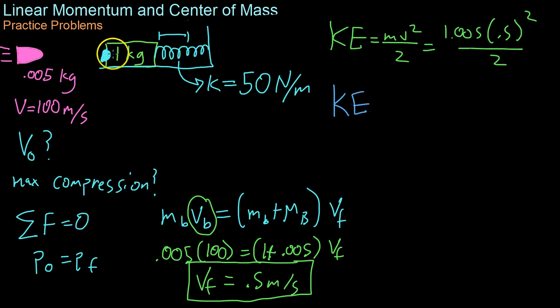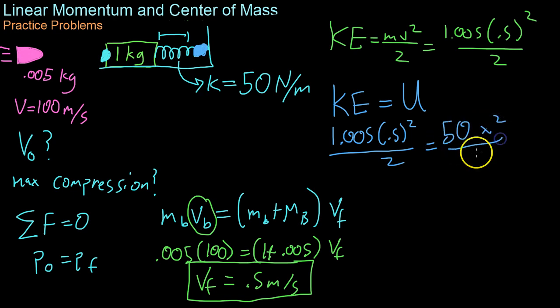In other words, the kinetic energy at this point is equal to the potential energy when it gets all the way back here and the spring is very compressed down in here. So we can take our kinetic energy equation we've solved for, set it equal to kx squared. In this case, that's 50 x squared over 2, the 2s cancel out, and we get x squared equals 1.005 times 0.5 squared over 50, or the final compression of the spring is 0.07 meters.